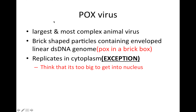Next up is the pox virus. The pox virus is the largest and most complex animal virus. It is brick-shaped — if you look at it through a microscope it's going to look brick-shaped or slightly round, like a rounded brick. It has an envelope and linear double-stranded DNA. To remember that, think 'pox in a brick box' — the box is for the envelope and also helps remember that it's brick-shaped.